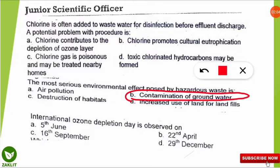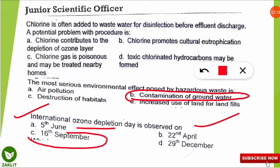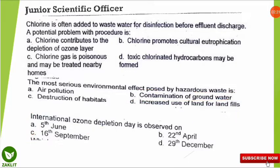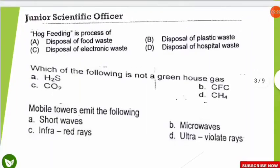The next question — I hope most of you will know this one. The international ozone depletion day is observed on which of the following dates? The correct option is that it is observed on 16th September every year — that is Ozone Depletion Day.